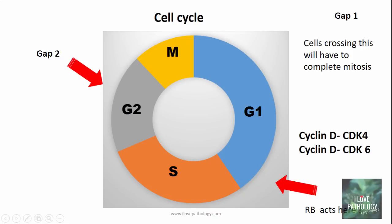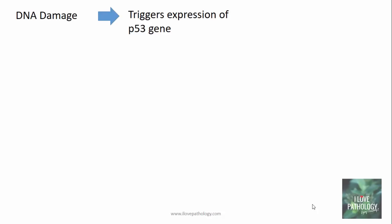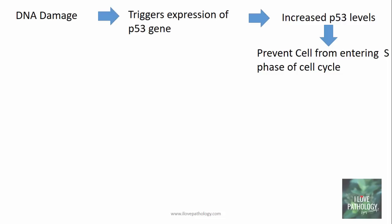If you want to study this or have a quick recap about retinoblastoma protein, you can click on the link provided in the description below. Now, let us consider what happens when there is DNA damage. Any form of DNA damage triggers the expression of p53 gene, which means there is increased p53 levels. This increased p53 level is what prevents the cell from entering the S phase of the cell cycle.